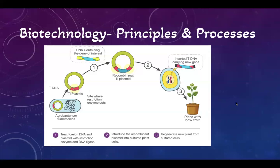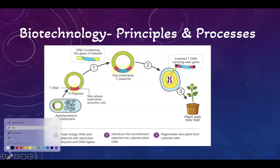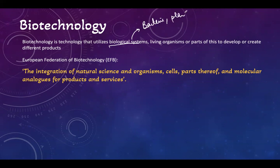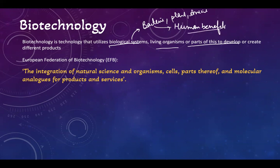Hello students, today we are starting with a new chapter of biotechnology: biotechnology principles and processes. A very simple definition — biotechnology is a technology in which we are using biological systems. A biological system can be any biological organism, suppose a bacteria, a plant or an animal, and we use these organisms for human benefits. We are using various biological systems to create them, to modify them, and we are using them for human benefits.